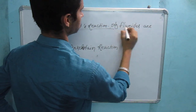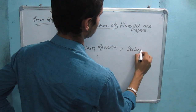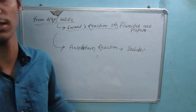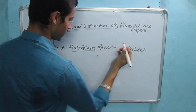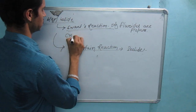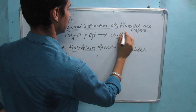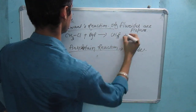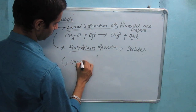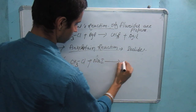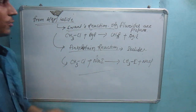Only fluorides are prepared by the Swarts reaction, and only iodides are prepared by the Finkelstein reaction using metal halides. For example: CH3–Cl plus AgF gives CH3–F plus AgCl. And CH3–Cl plus NaI gives CH3–I plus NaCl.